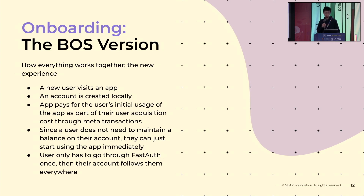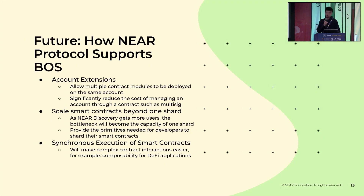So how does everything come together to create a new onboarding experience? Basically, a new user visits an app, and through biometric authentication, a key pair is generated locally — that is the user's account. The application pays for the user's initial usage as part of user acquisition costs through metatransactions. Since users don't need to maintain any balance, they can start using applications right away. And this experience is great not just for one app — the user only needs to create an account once and can use it across any application on Near.